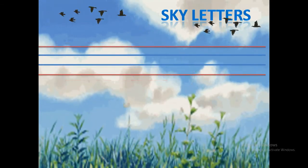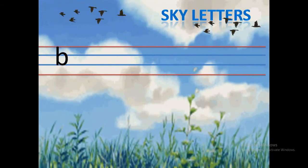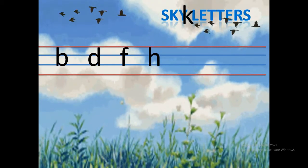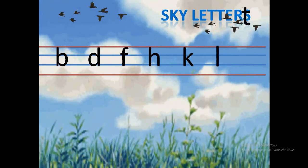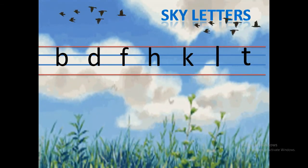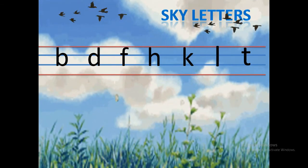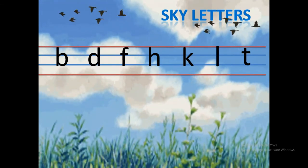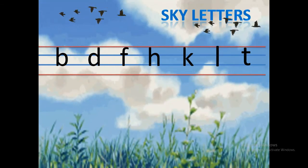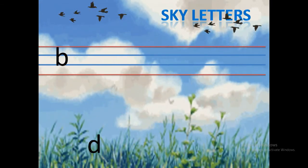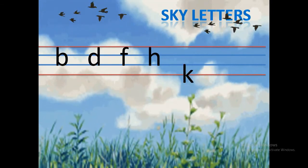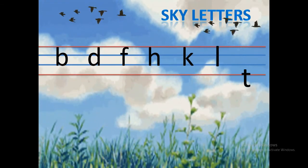Let's see which letters are sky letters: B, D, F, H, K, L, T. Look at these letters — all start at the top red line and end at the second middle line. These letters don't touch the bottom red line. Children, repeat with me: B, D, F, H, K, L, T.